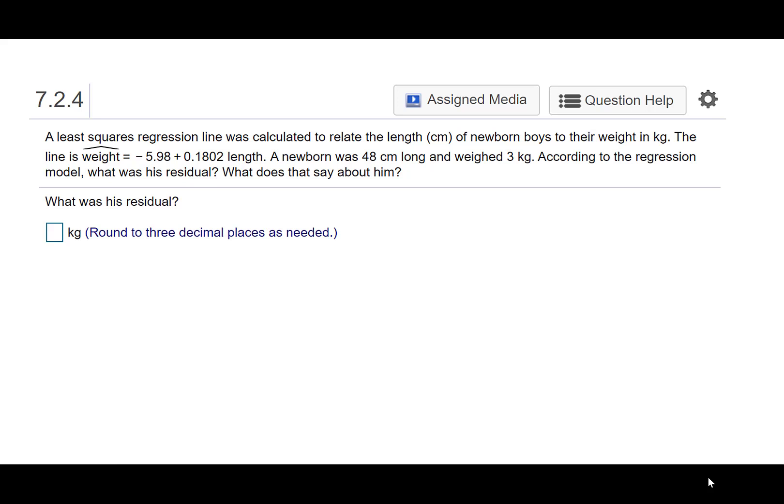A least squares regression line was calculated to relate the length in centimeters of newborn boys to their weight in kilograms. The line is weight hat equals negative 5.98 plus 0.1802 times the length. A newborn was 48 centimeters long and weighed three kilograms. According to the regression model, what was his residual and what does that say about him?